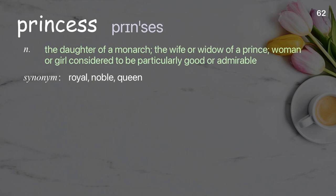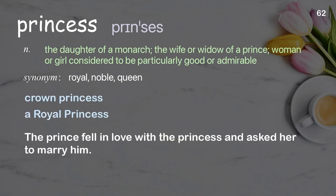Princess: the daughter of a monarch; the wife or widow of a prince; a woman or girl considered to be particularly good or admirable. Examples: crown princess, a royal princess. The prince fell in love with the princess and asked her to marry him.